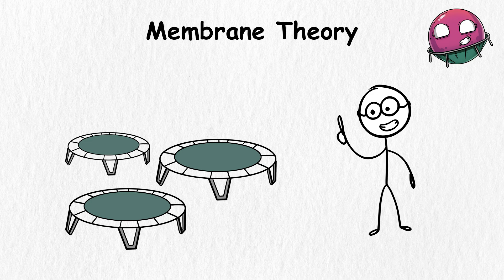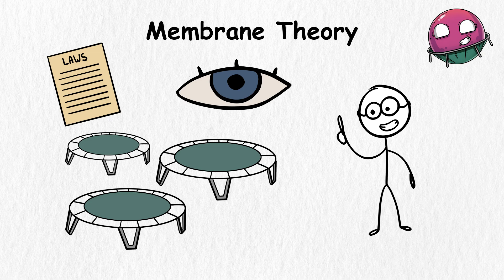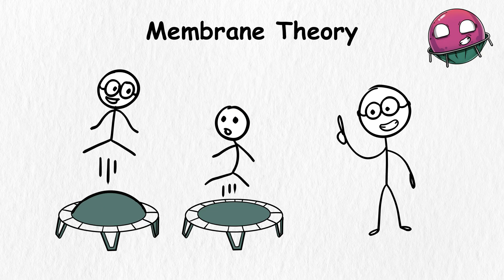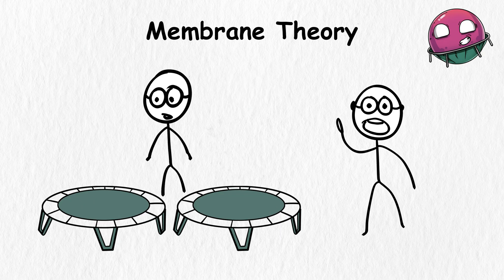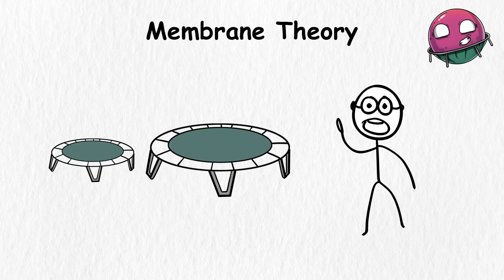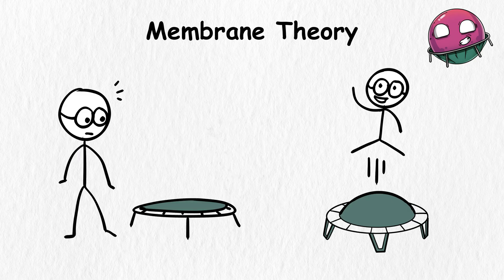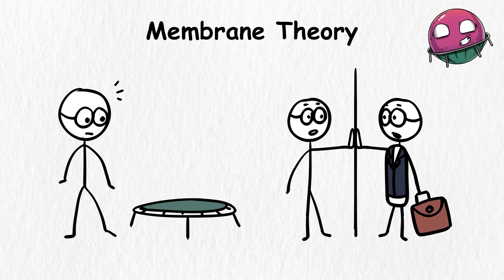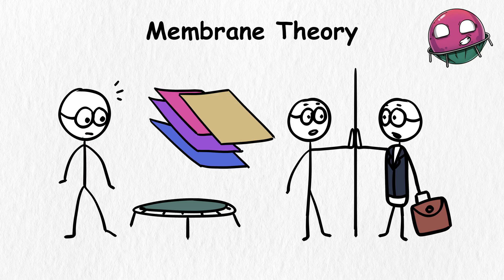Think of the bulk as a giant trampoline park with different trampolines. Each trampoline has its own unique set of laws and realities, just like different trampolines can vary in size and bounciness. For example, the trampoline next to you might look the same, but it's actually a bit bigger and allows you to bounce higher. This trampoline next to you is what you'd call a parallel universe. That's how these branes and the membrane theory work.